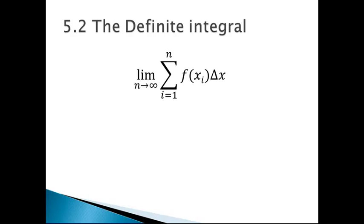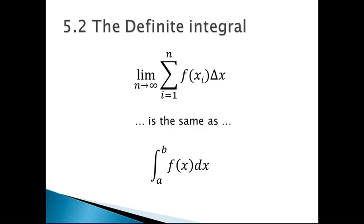f(x) is the y, delta x is the x, and the area of a rectangle is base times height — x times y. As n approaches infinity and delta x approaches zero, the sum of all those little rectangles approximates the area under the function over that interval. There's another way to write that using Leibniz's integral notation — Leibniz being one of the inventors of calculus in the 1600s. We read this as the integral from a to b of f(x) dx, which means the same thing as the limit of the sum of f(x) delta x as n approaches infinity.